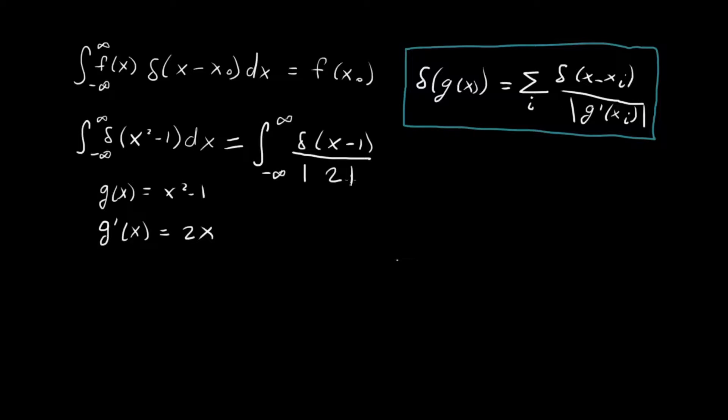What about the second contribution? We're also going to have something for x = -1, so we get δ(x + 1) divided by the same thing. Here x = -1, so this is -2 with absolute values, which is also 2.